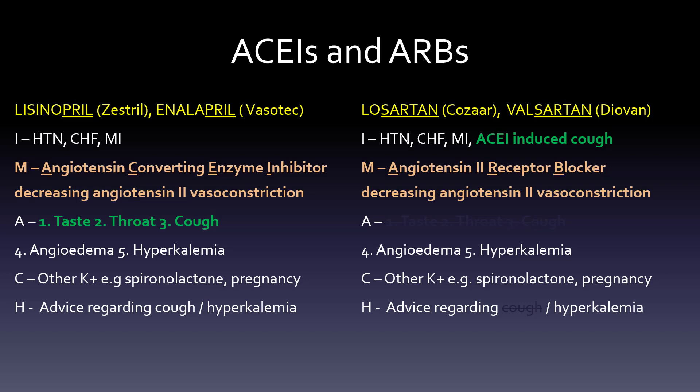Alpha blockers — we'll go through the three parts. The -AZOSIN stem: prazosin, doxazosin, terazosin — all very similar. We used the prazosin mnemonic using the word PRAZOSIN itself to remind us of three indications: PR for prostate or BPH, RAZ to remind us it's for Raynaud's — when your fingers or toes are really cold because not enough blood is getting to them — and SIN for hypertension. It does this by relaxing the bladder neck for prostate and by causing vasodilation for Raynaud's and hypertension.